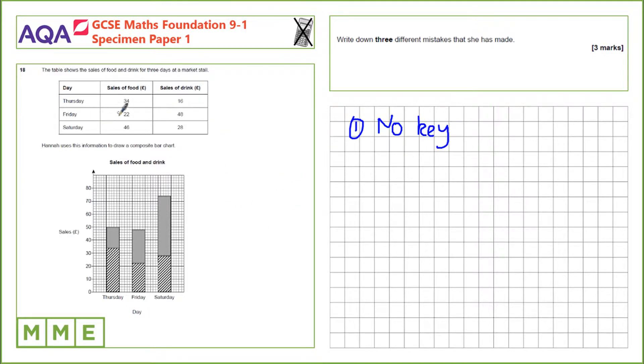The second one, if we have a look at the data here, we notice that the sales of food and drink on Friday should add up to 70.